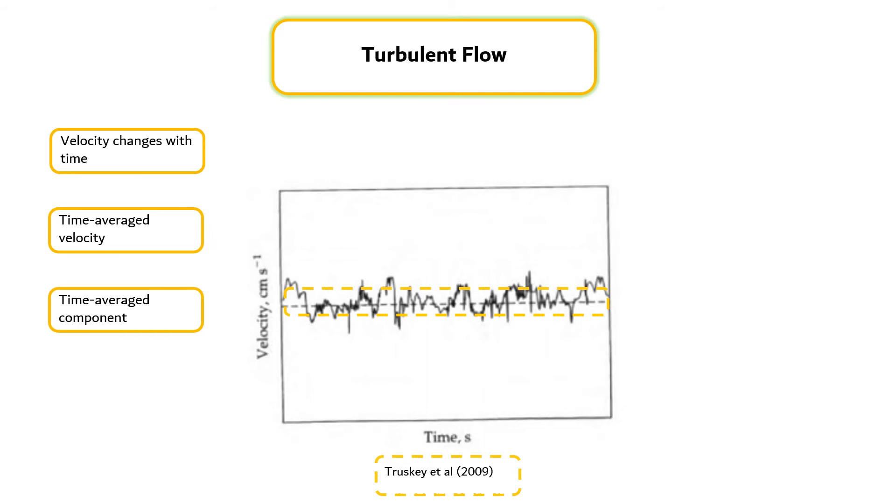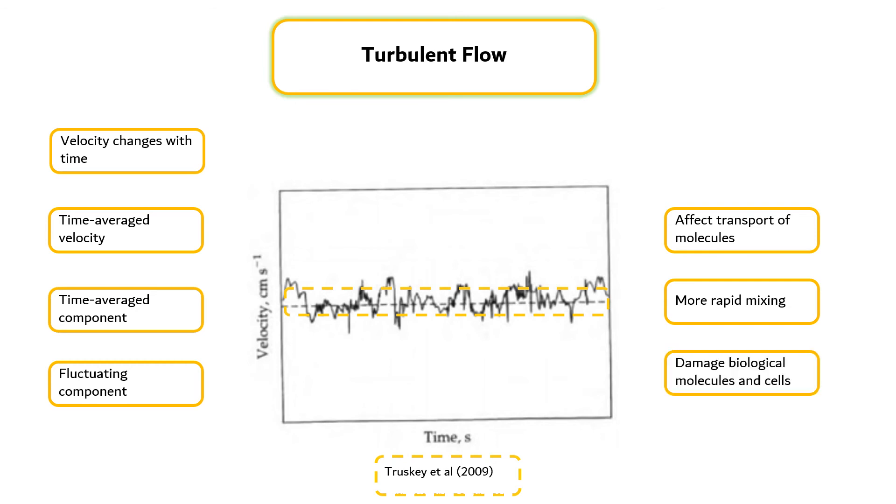Often, the velocity in turbulent flow is characterized as the sum of a time average component and a fluctuating component with a zero time average. Turbulence affects many transport phenomena. Turbulence affects the transport of molecules, often producing more rapid mixing than what is observed under laminar flow conditions. Turbulence stresses also can damage biological molecules and cells.